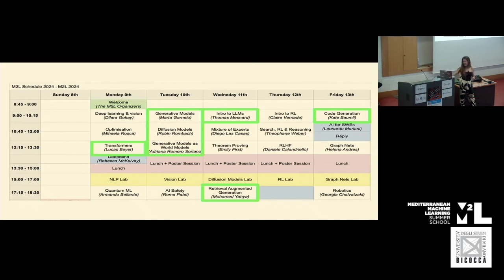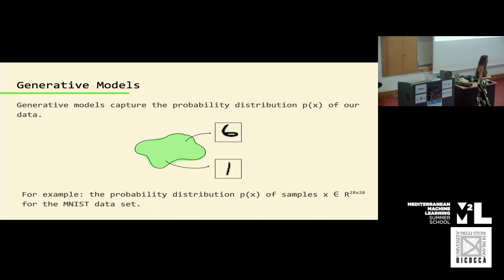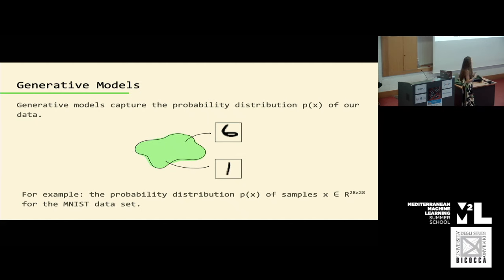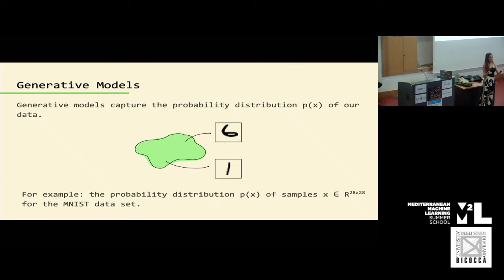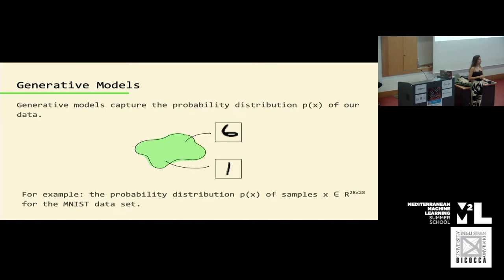So question number one: what is a generative model? A generative model, very basically, is a machine learning model that tries to learn the probability p(x) of our data — the probability distribution. Normally this is displayed as a green blob representing some data distribution in some space, and individual points from that distribution represent the probability for the different samples. For example, for MNIST, that blob would show you the probability of sampling the different images, where a sample could be a six or a one. This is the probability distribution you want to learn.